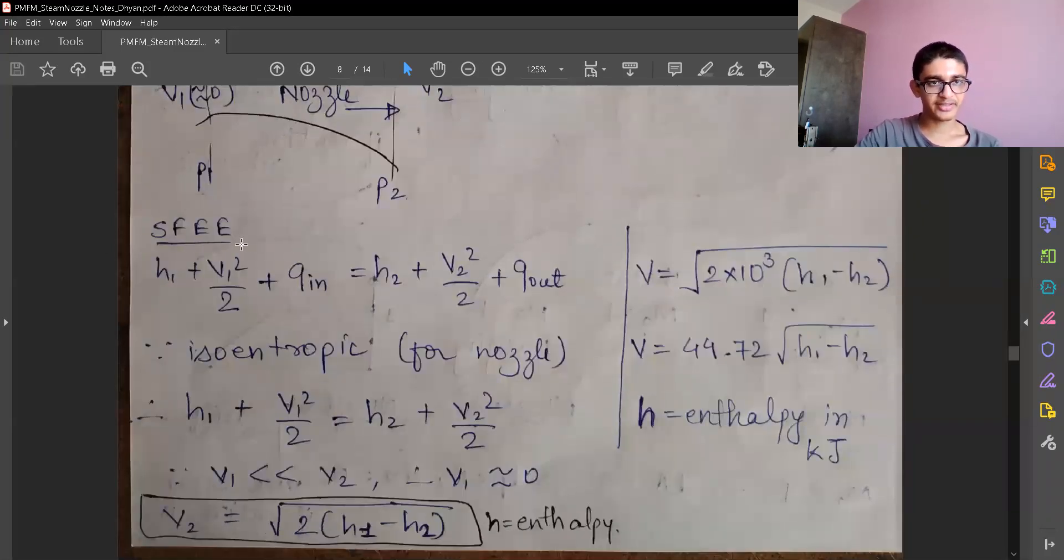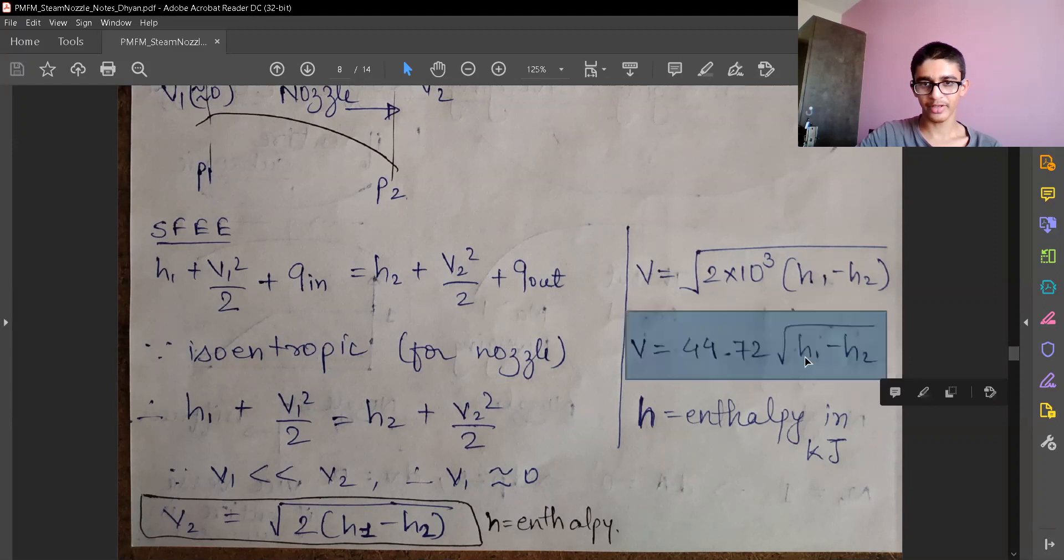So steady flow energy equation SFEE: enthalpy, velocity, and heat. For isentropic, for a nozzle, it's an isentropic process, so heat transfers are zero and V1 is approximately zero because V1 is much less than V2. So we have velocity V2 in terms of enthalpy, and if we want enthalpy in terms of kilojoules, we have taken 10 raised to 3 out and we can enter enthalpy in kilojoules and use this formula for velocity. This is the velocity at the outlet.